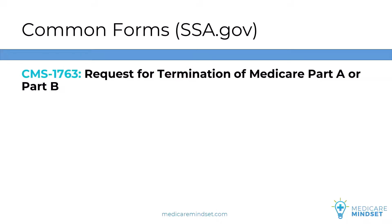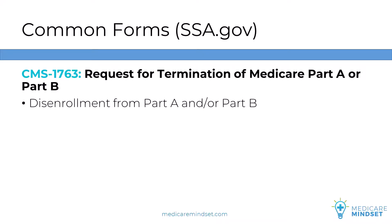Form CMS-1763 is the Request for Termination of Medicare Part A or Part B. Sometimes Medicare beneficiaries enroll in a part of Medicare and then realize later that was a mistake. For example, someone might disenroll from Part B because they are currently covered in a group health plan based on their active employment that is primary to Medicare. Additionally, Part B has a monthly cost, so it might not make financial sense to keep it in that situation.